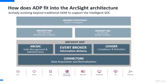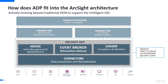Now in the ArcSight architecture, where ADP fits in is this blue box at the bottom. Within that blue box, you'll see four things: the connectors for all data acquisition and normalization, the Event Broker where all that data gets sent and things can subscribe to pull that data out, ArcMC on the left-hand side for administration and management of all components, and on the far right-hand side, ArcSight Logger for long-term retention and compliance reporting. All four components make up the ArcSight ADP platform.